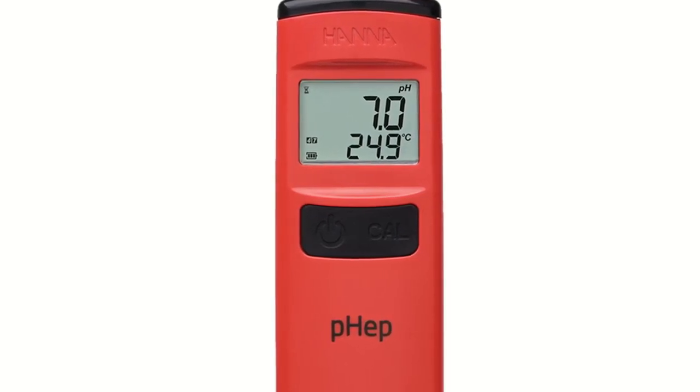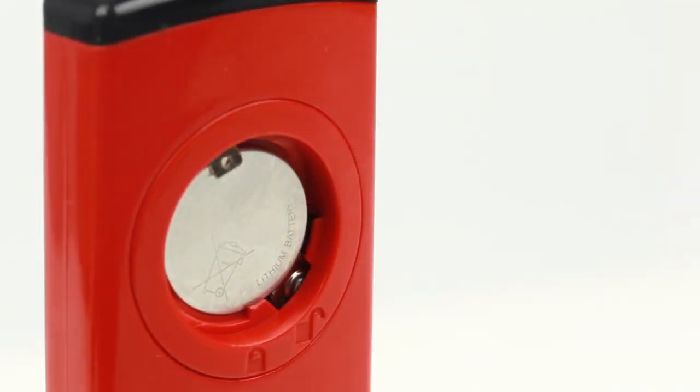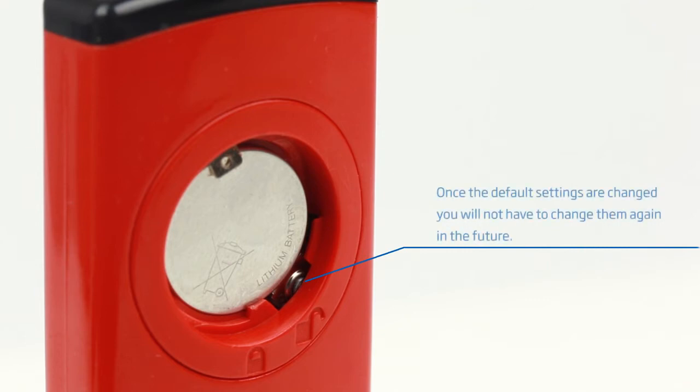The daily operation of the meter has been simplified to just two buttons. One is for turning the meter on and off, while the other is used to enter calibration mode. There is a third button in the battery compartment that allows the user to choose the displayed temperature unit and adjust the automatic shutoff time.